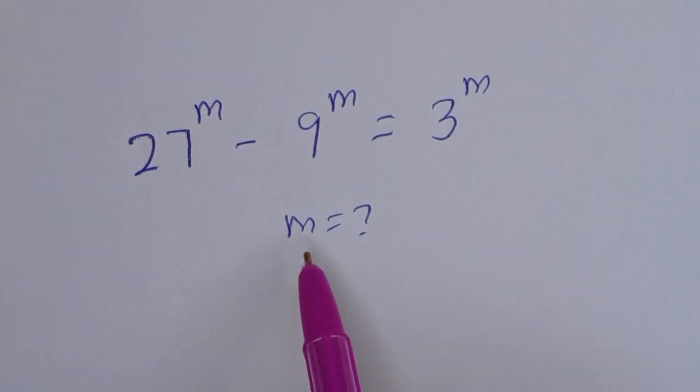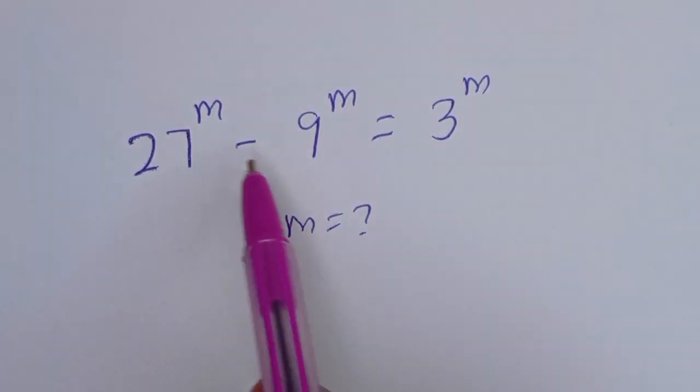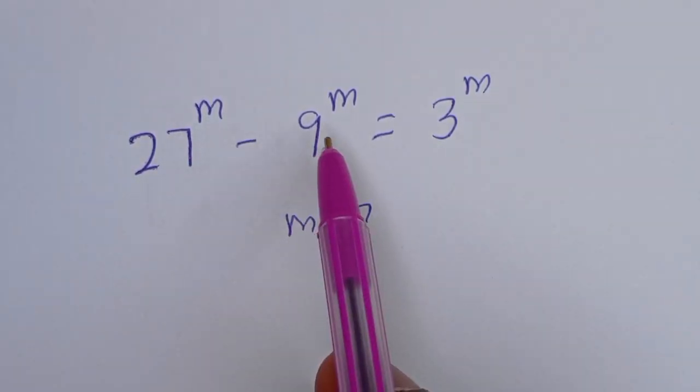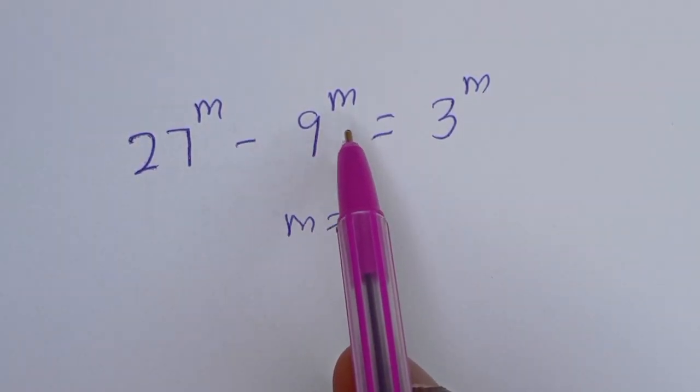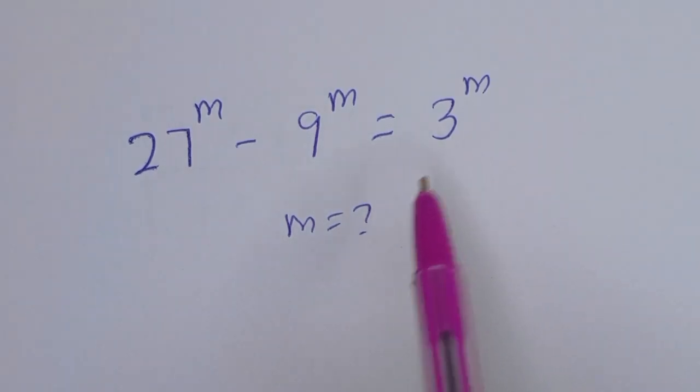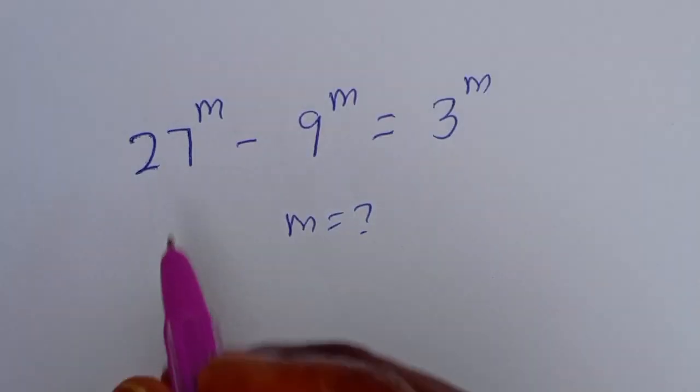Hello. How to solve for M in this equation: 27 to the power of M minus 9 to the power of M is equal to 3 to the power of M.